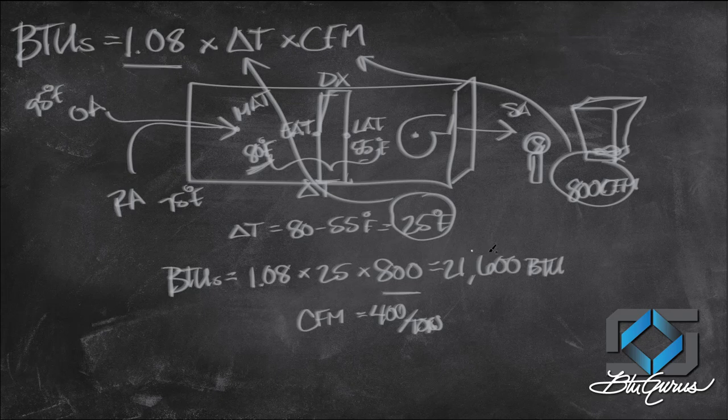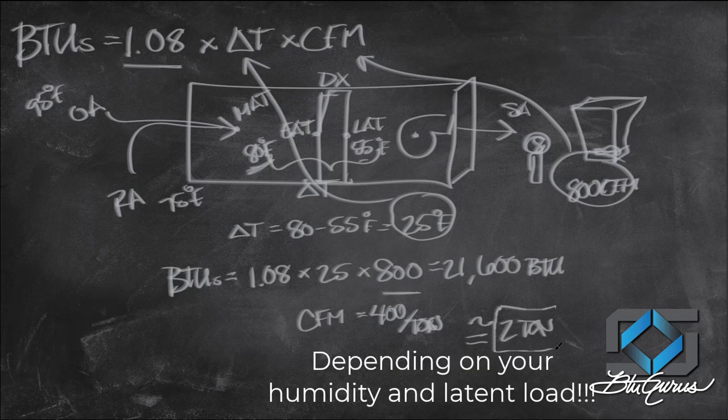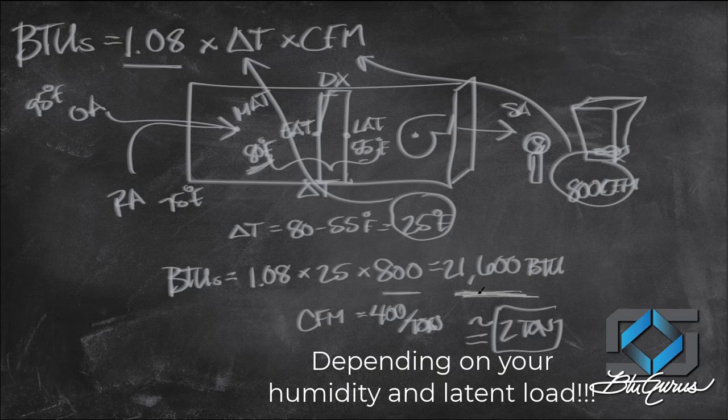If I'm doing 800 CFM, that would end up approximating the unit to be a two-ton unit. But because I used this example, I also wanted to show you where that rule of thumb usually actually comes from, and that's a targeted delta T.